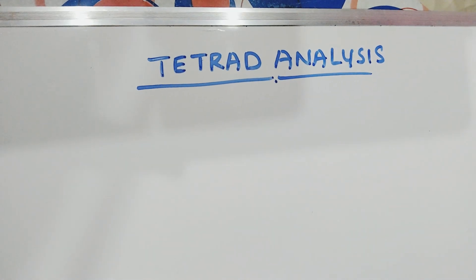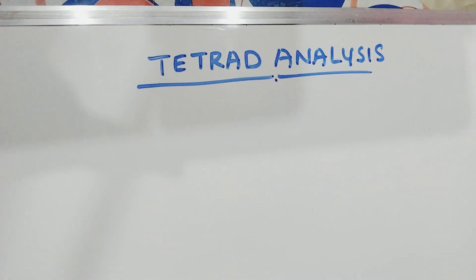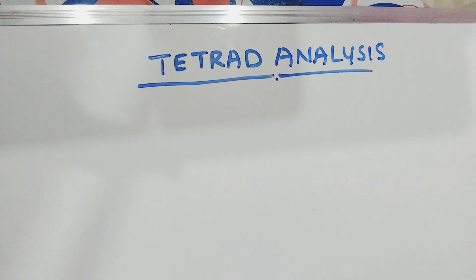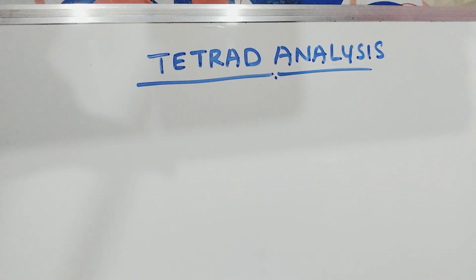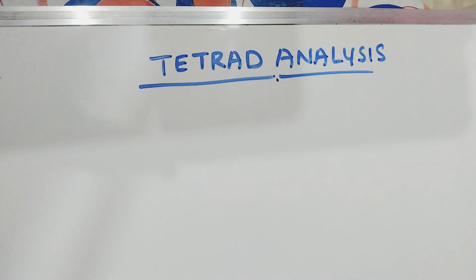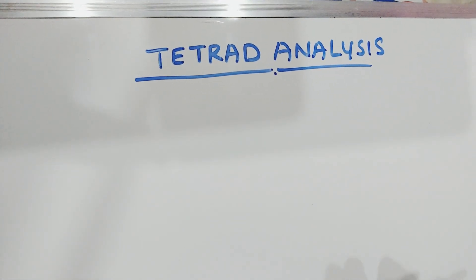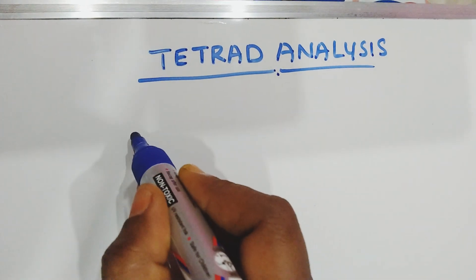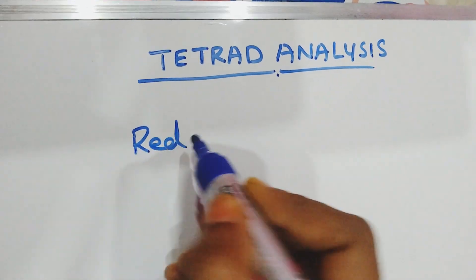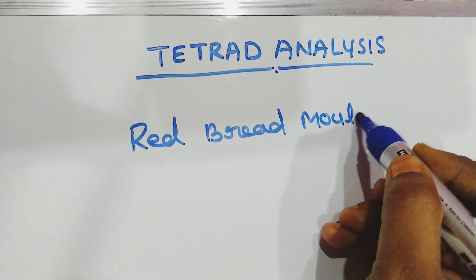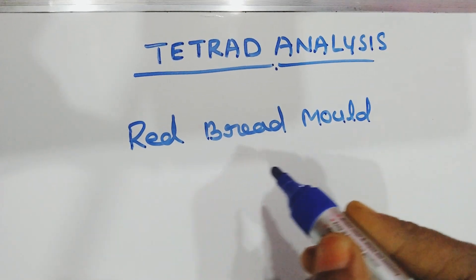Hello everyone, welcome back to my channel Competitive Botany. In this video we are going to see what is tetrad analysis. We have already discussed in the previous video about crossing over and the mechanism of crossing over and different theories explaining the crossing over. The genetical proof for crossing over is provided during the tetrad stage of red bread mould, that is Neurospora crassa.